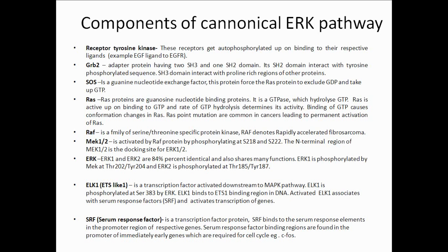The next component is RAF, which is a family of serine/threonine-specific protein kinases. RAF denotes rapidly accelerated fibrosarcoma. MEK1 or MEK2 is another component of the ERK pathway and is activated by RAF protein, meaning it is downstream of RAF. The RAF protein phosphorylates MEK at serine 218 or serine 222. The N-terminal region of MEK is the docking site for ERK.